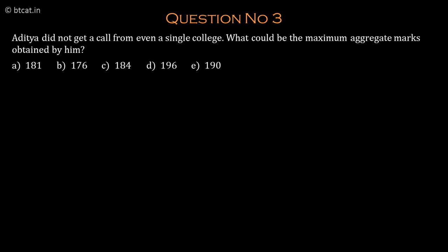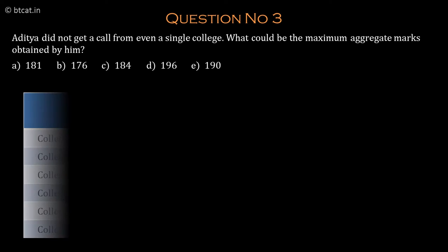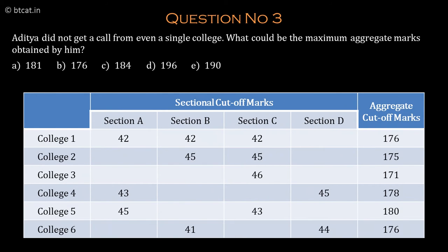Next question: Aditya did not get a call from even a single college — what could be the maximum aggregate marks obtained by him? To find the maximum marks given he got no call, we look at section C and section D columns, which together cover all colleges. The job is to make sure he does not clear the sectional cutoff in any college.